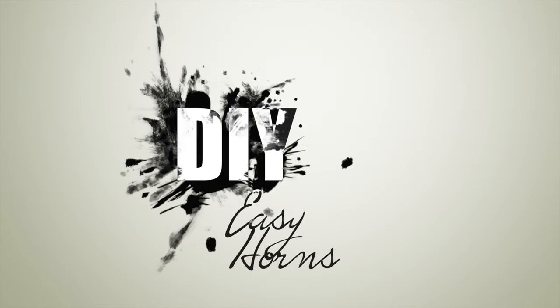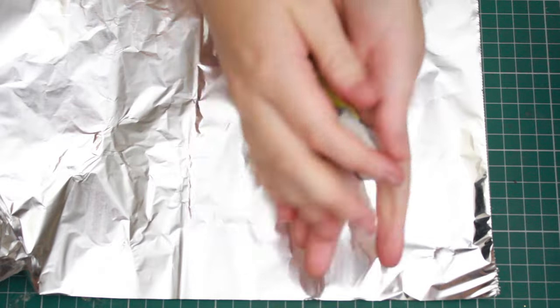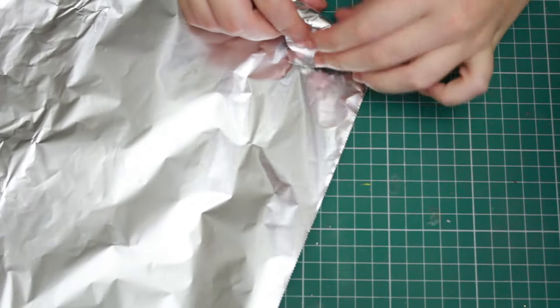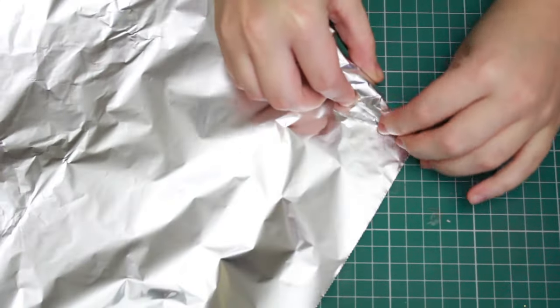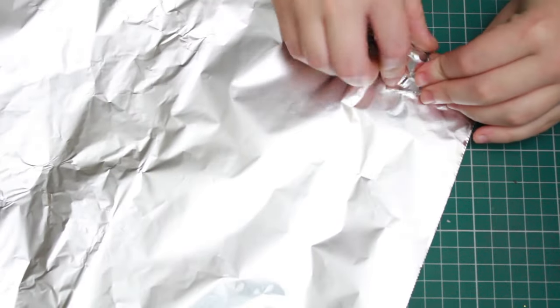So I've already done a tutorial for how to make horns, but I thought I'd do a different version which is slightly easier and using materials most people would have. So I'll be using newspaper and tin foil.